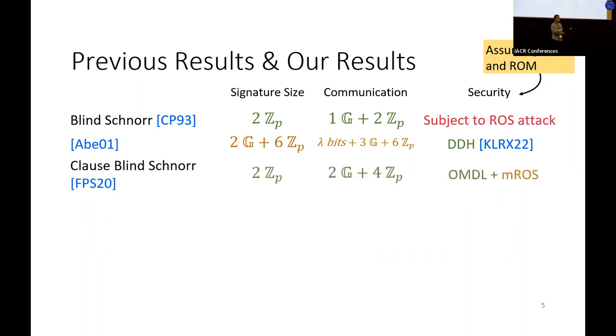A more efficient scheme was proposed by Fuchsbauer in 2020, which is the so-called CLAUS blind Schnorr. The signature size is exactly the same as blind Schnorr with double communication. However, its security relies on a new assumption, namely the so-called MFOS problem is hard, where MFOS is a variant of ROS proposed in their paper.